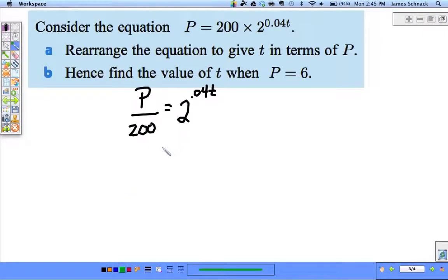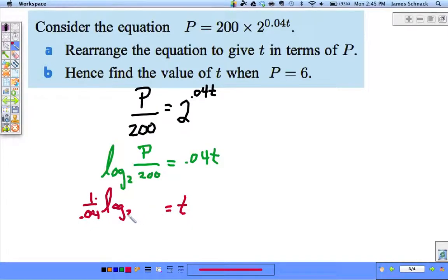What log form should we use? The base is 2. So log base 2 of P/200 equals 0.04t. To get t alone, divide both sides by 0.04. I'll write it as t = (1/0.04) × log base 2 of P/200.